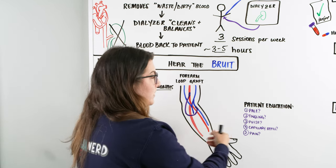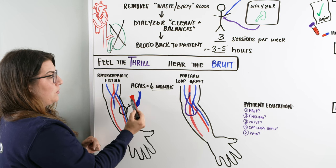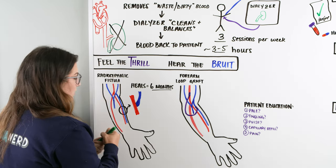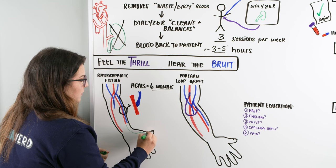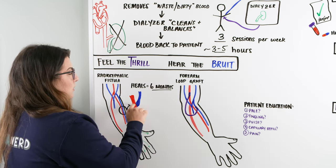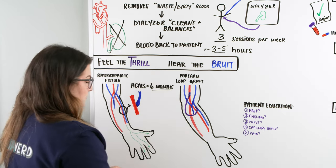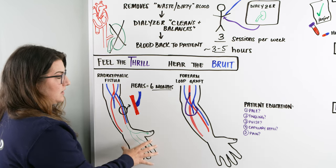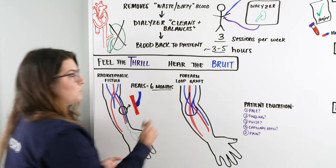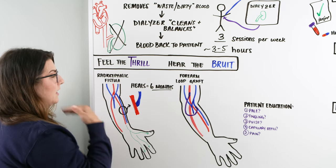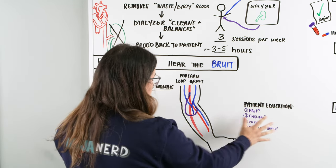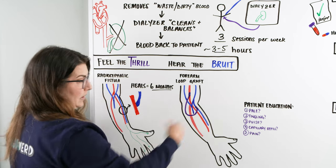When teaching patients how to assess their own fistula, we need to think about perfusion. We've surgically adhered an artery to a vein, which shunts blood into a different vessel, compromising blood flow to the hand. This is normal with a fistula, but it shouldn't be so compromised that we get ischemia. So when teaching patients warning signs, perfusion is the biggest concern.